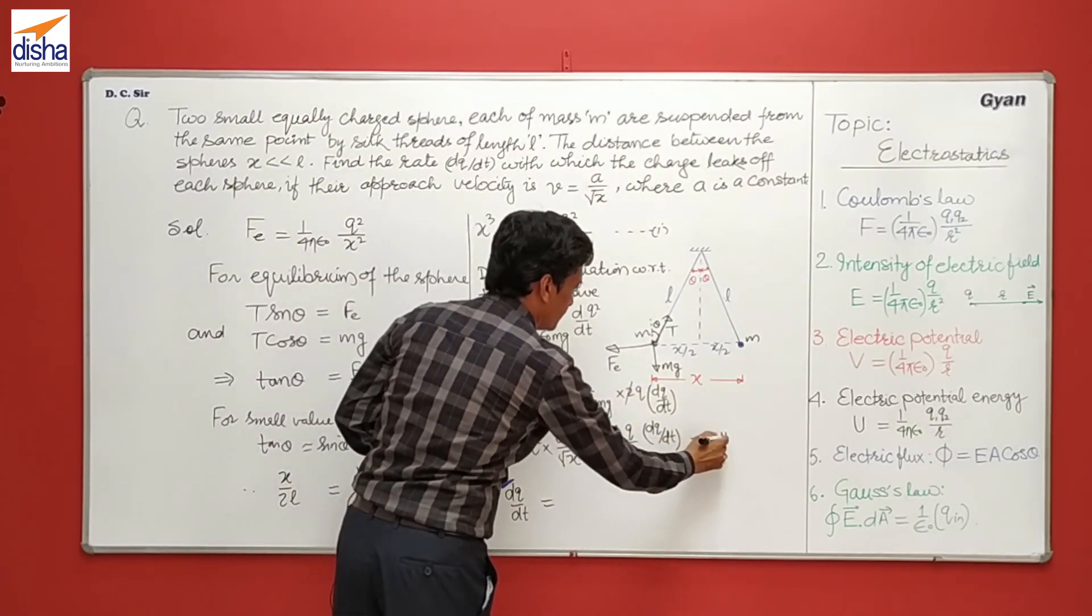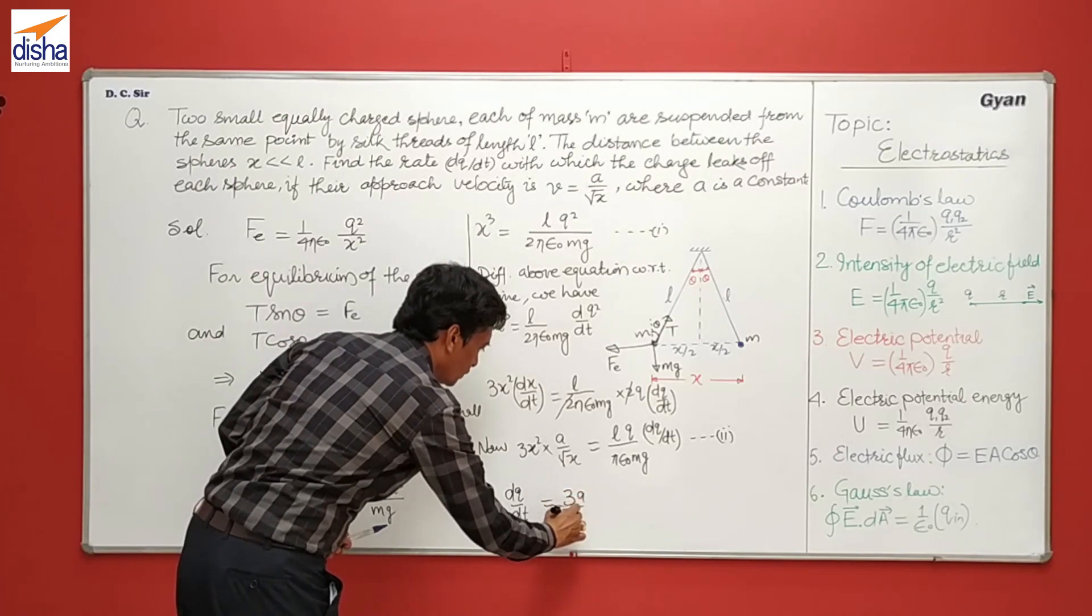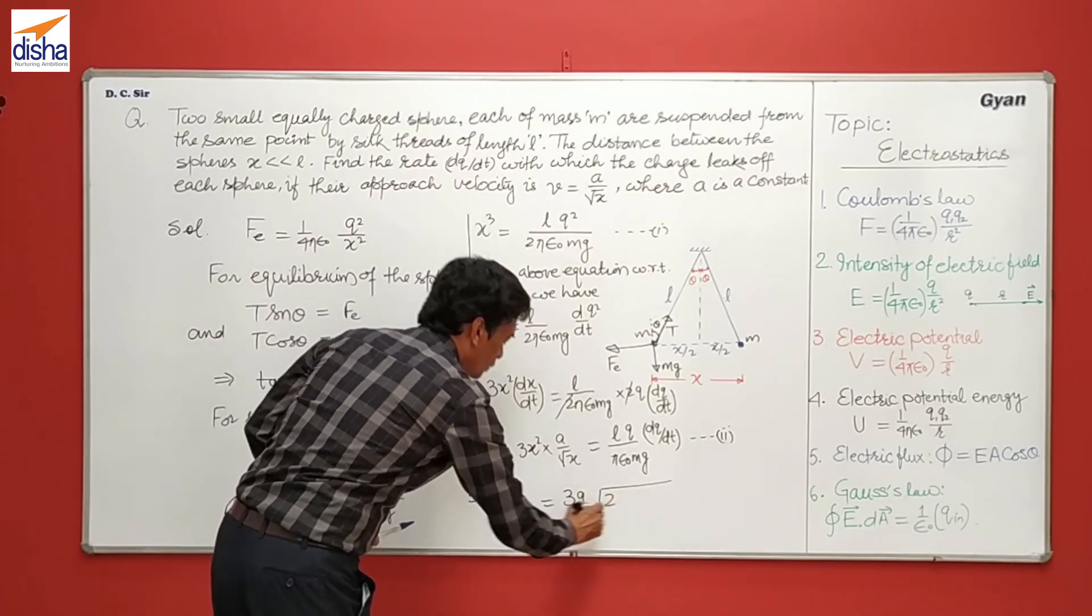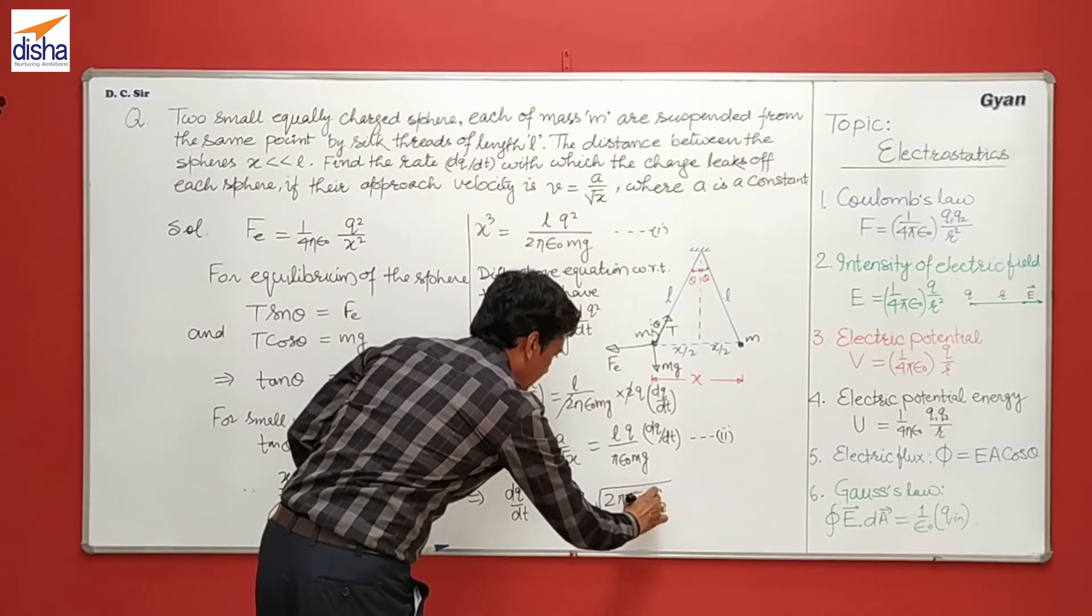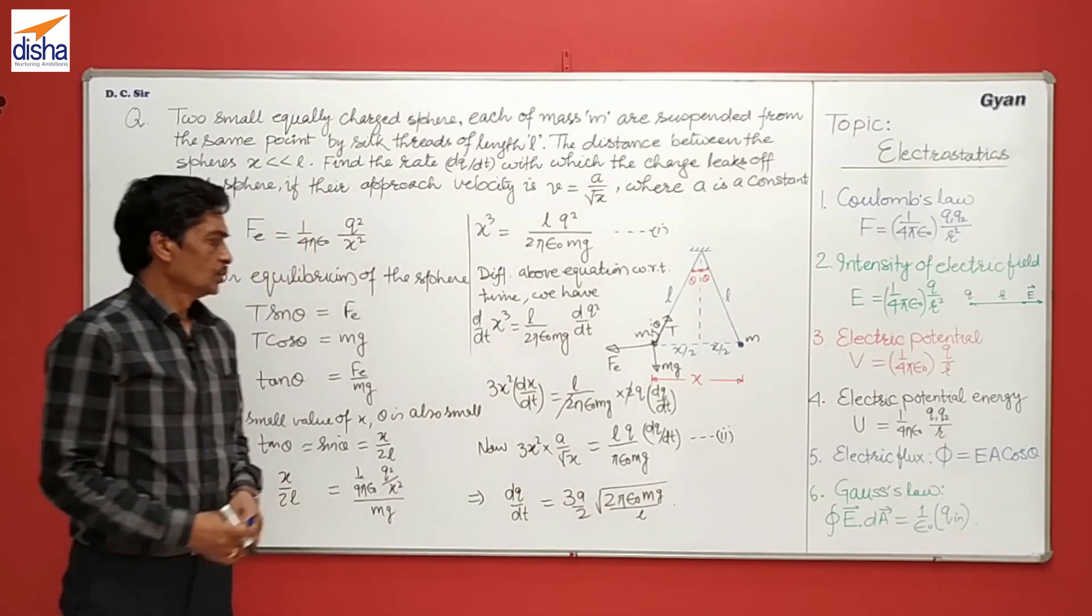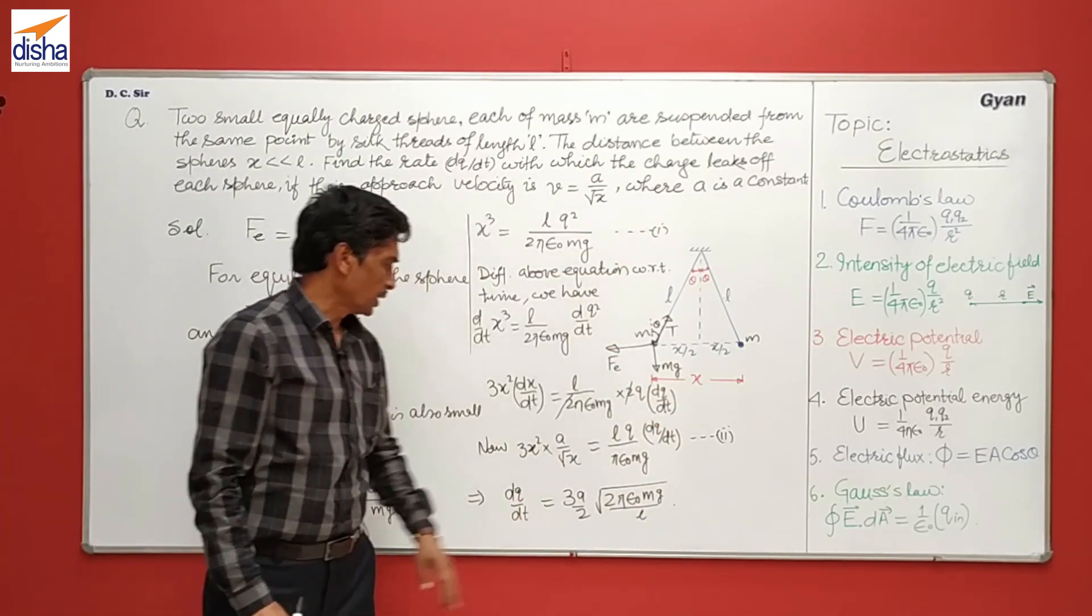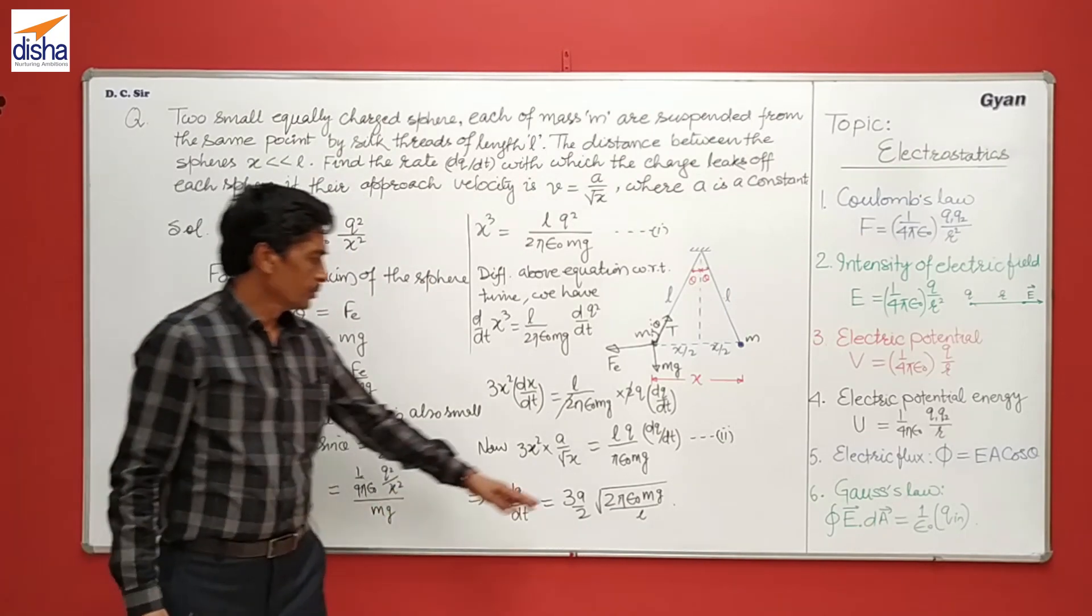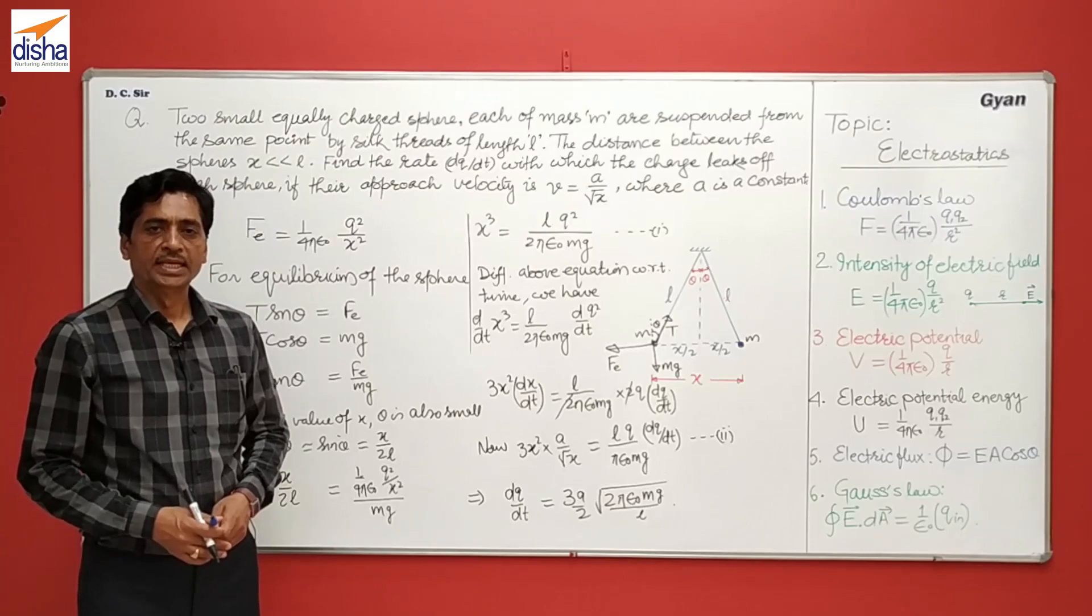And solving we have 3a root 2 upon 2 pi epsilon naught MgL. So after solving the equation we have the rate of leak of the charges 3a root 2 upon 2 pi epsilon naught MgL. Thanks for watching the video.